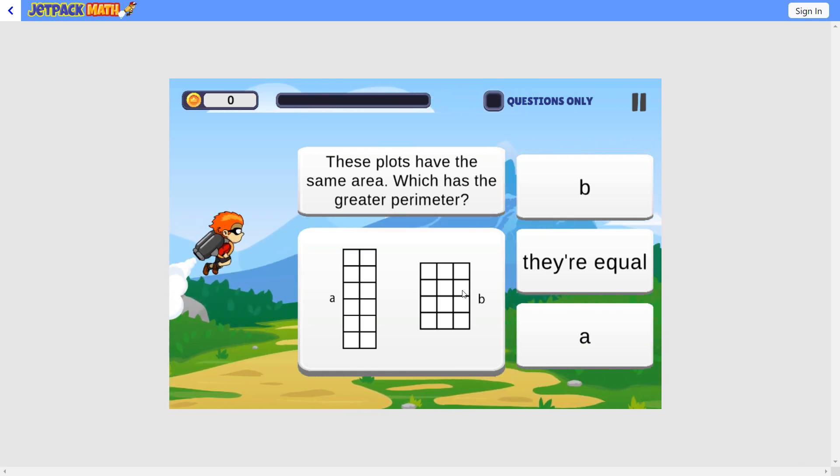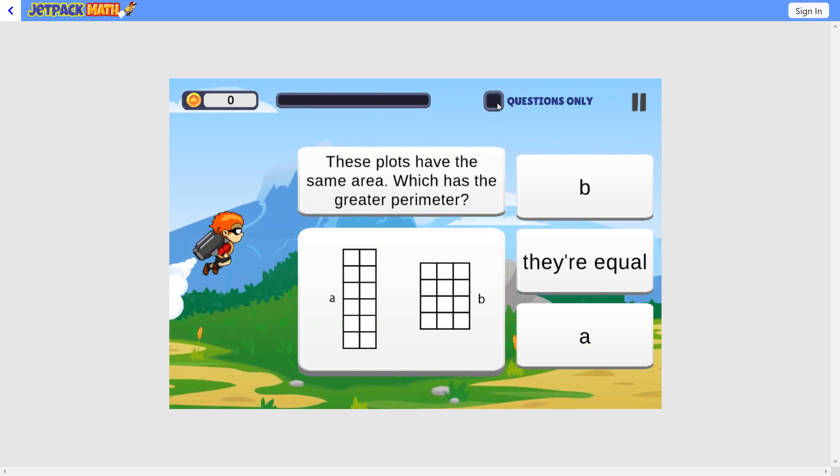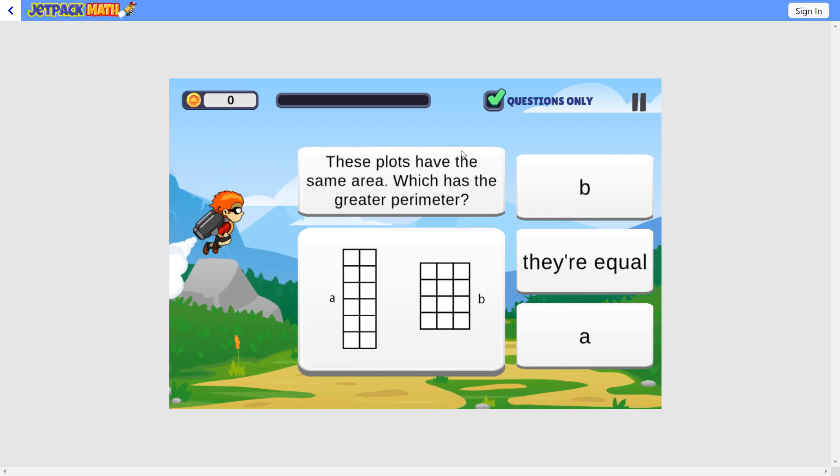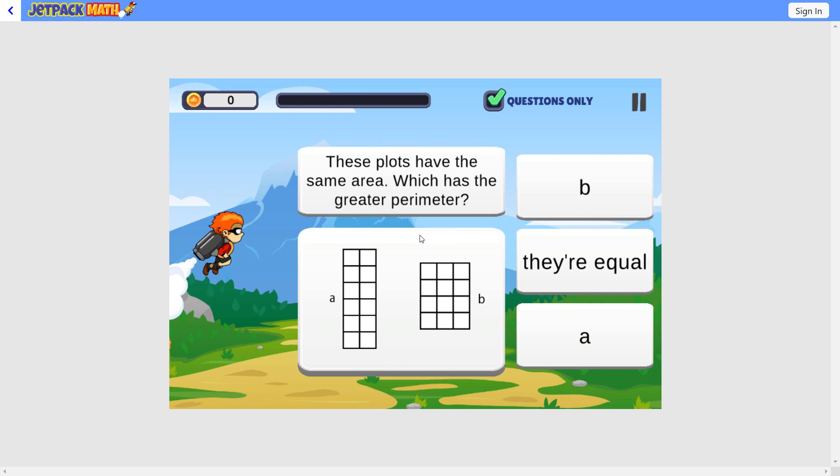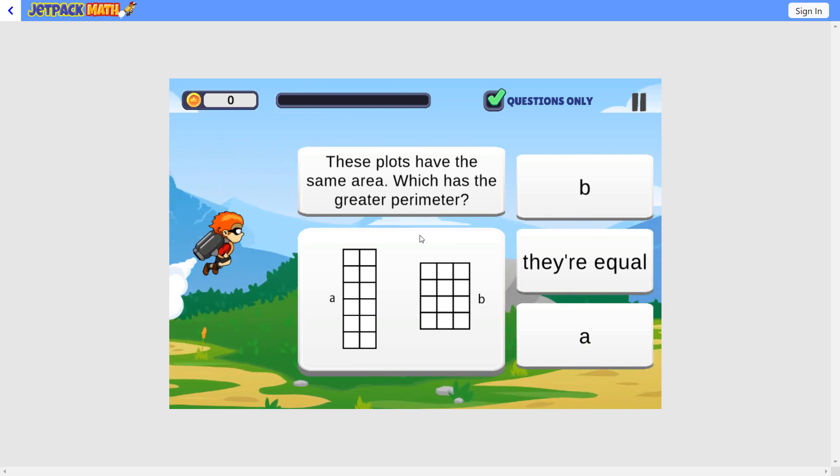These plots have the same area, which has the greater perimeter. So it's telling us that the area is the same, but we're interested in the bigger perimeter. Let's add them up.